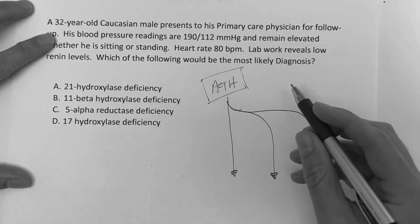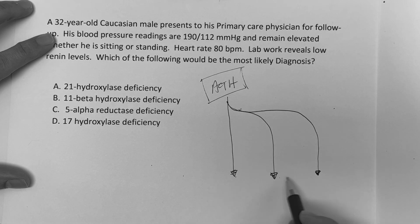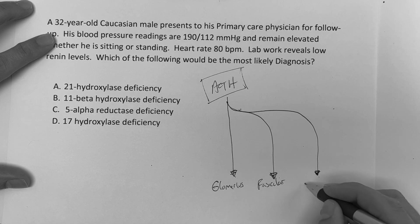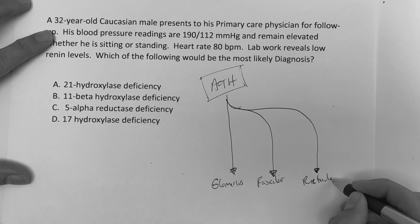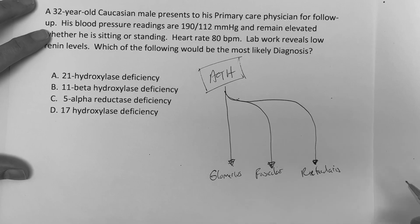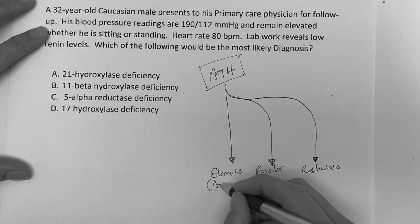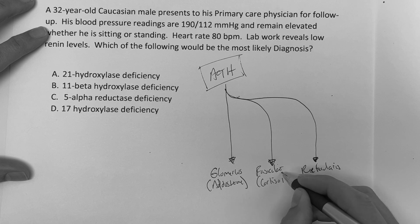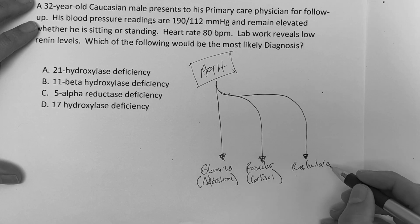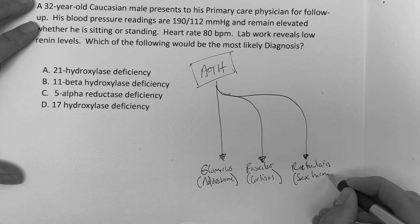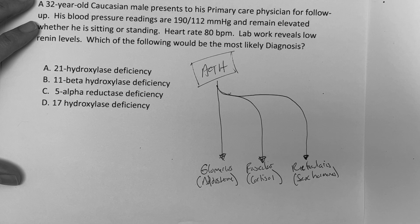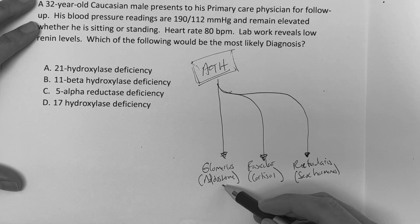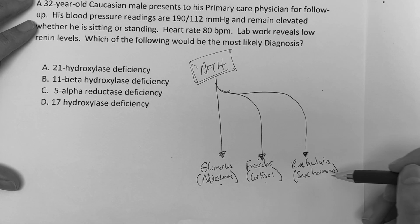So ACTH, right? And so you have three different layers, the glomerulosa, the fasciculata, and the reticularis. With the glomerulosa, I want you to think aldosterone. With the fasciculata, I want you to think cortisol. And then with the reticularis, I want you to think sex hormones. So again, three layers, starts here, ACTH. It's going to stimulate the adrenal cortex, and you're going to get the glomerulosa aldosterone, fasciculata cortisol, and then the reticularis is going to be the sex hormones.